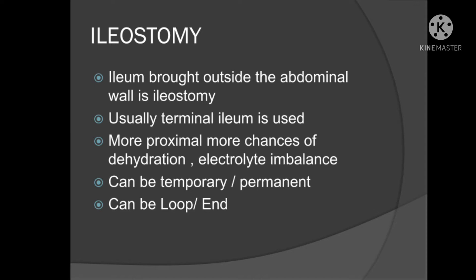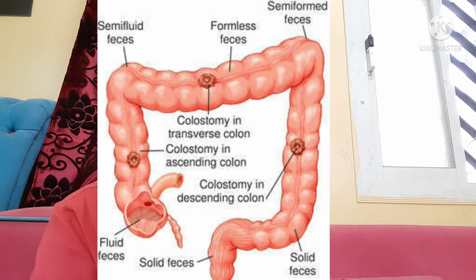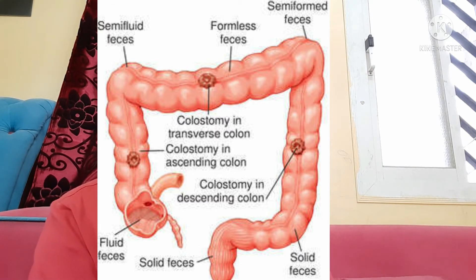One important thing to understand is that the more proximal the stoma, the more liquid the content will be. As food is being digested in the intestine, it is in liquid form, and as it passes more distally, water is being reabsorbed. Ultimately in the colon, particularly when it reaches the descending colon, it becomes solid stool. So the more proximal the stoma, the more chances of liquid stool.